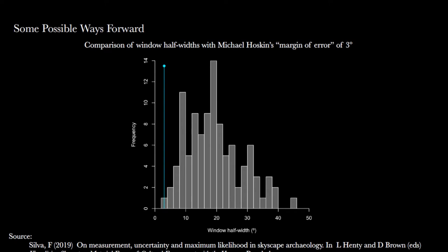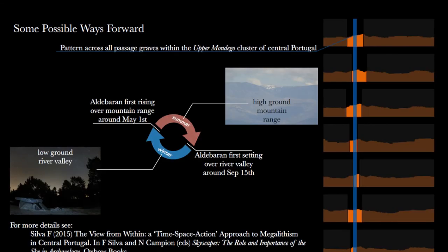I actually measured these windows for about 150 passage graves in Portugal and Galicia. This is a histogram of the half-widths compared with Hoskin's uncertainty value of two to three degrees. You can now see more clearly what I mean by the uncertainty having been underestimated or completely ignored. That's the minimum level of uncertainty I found, whereas the mode is actually 19.5 degrees—huge levels of uncertainty. Yet when you look at the numbers in the publications and the inferences taken from these numbers, it looks like it's all very certain, but in fact it isn't.